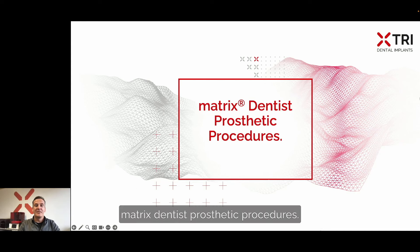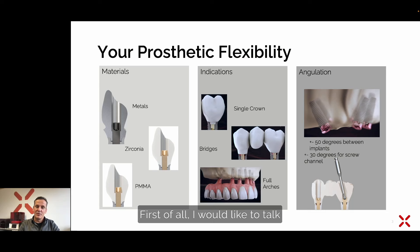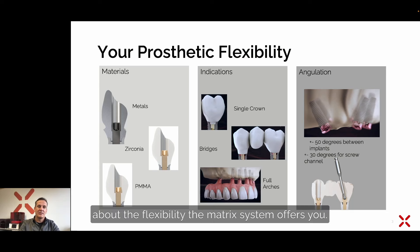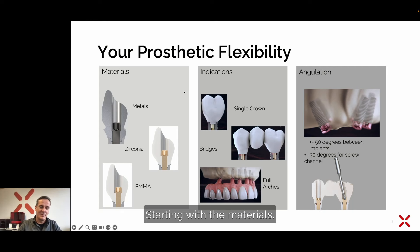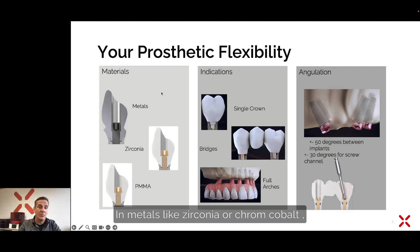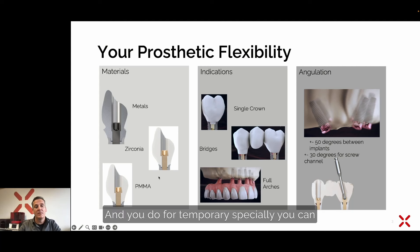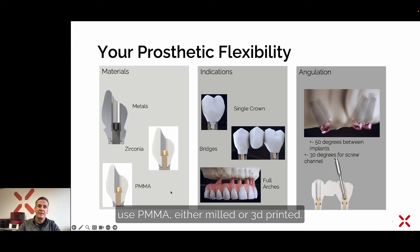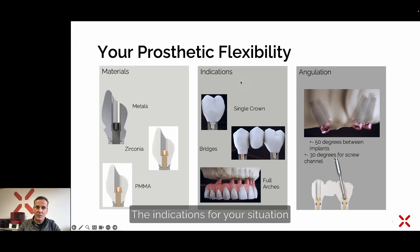Welcome to the lecture on matrix dentist prosthetic procedures. First, I would like to talk about the flexibility the matrix system offers, starting with the materials. You can do prosthetics in metals like zirconia or chrome cobalt, different zirconias, and for temporaries especially you can use PMMA, either milled or 3D printed.